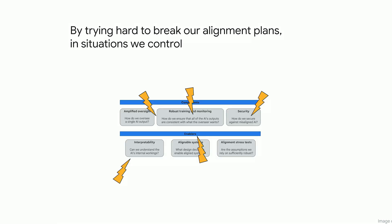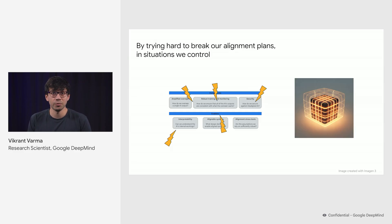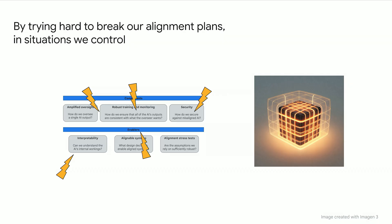So just like bridge builders, for example, would stress test the various components of a bridge to gain additional confidence about its structural integrity, we need to stress test the different components of our alignment plan to find situations where our plans fail, but where we can easily recover from the failure and improve our plans.